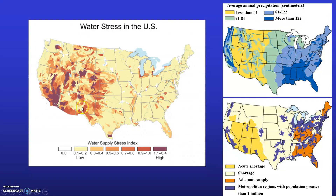High risk regions include the southwest, with California being the number one state facing scarcity — you can tell by the color coding that California has the greatest area considered to be in a high water supply stress index. Then the western Great Plains as well as the northwest. Watersheds are considered stressed when water demand from power plants, agriculture, and municipalities exceeds 40% of the available water supply.